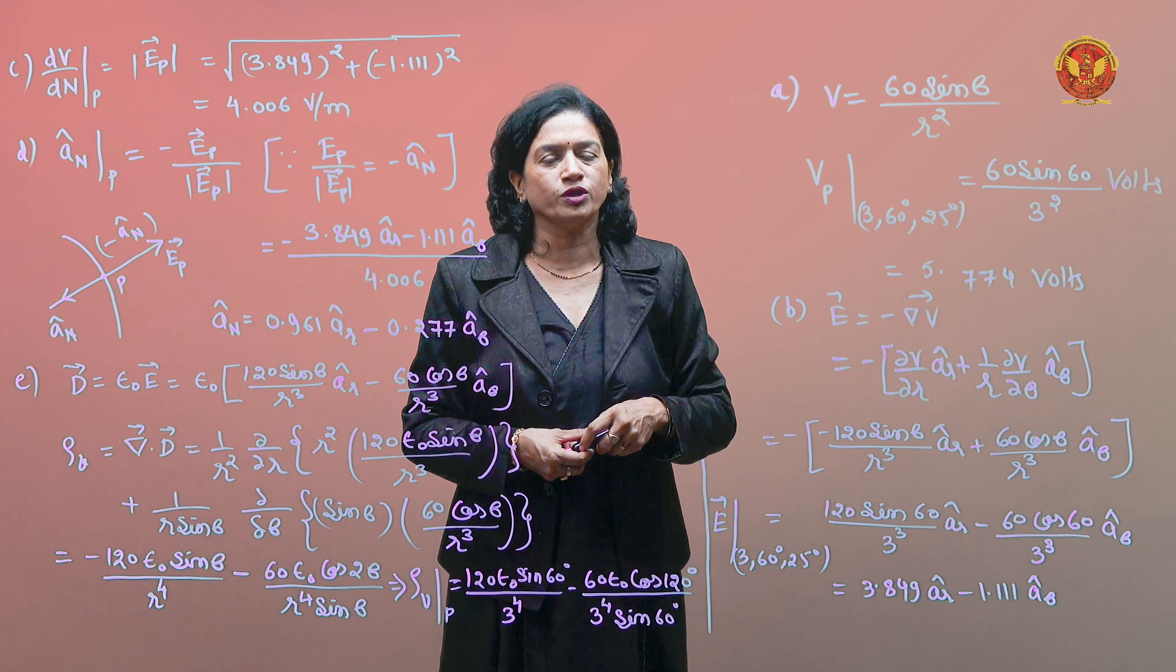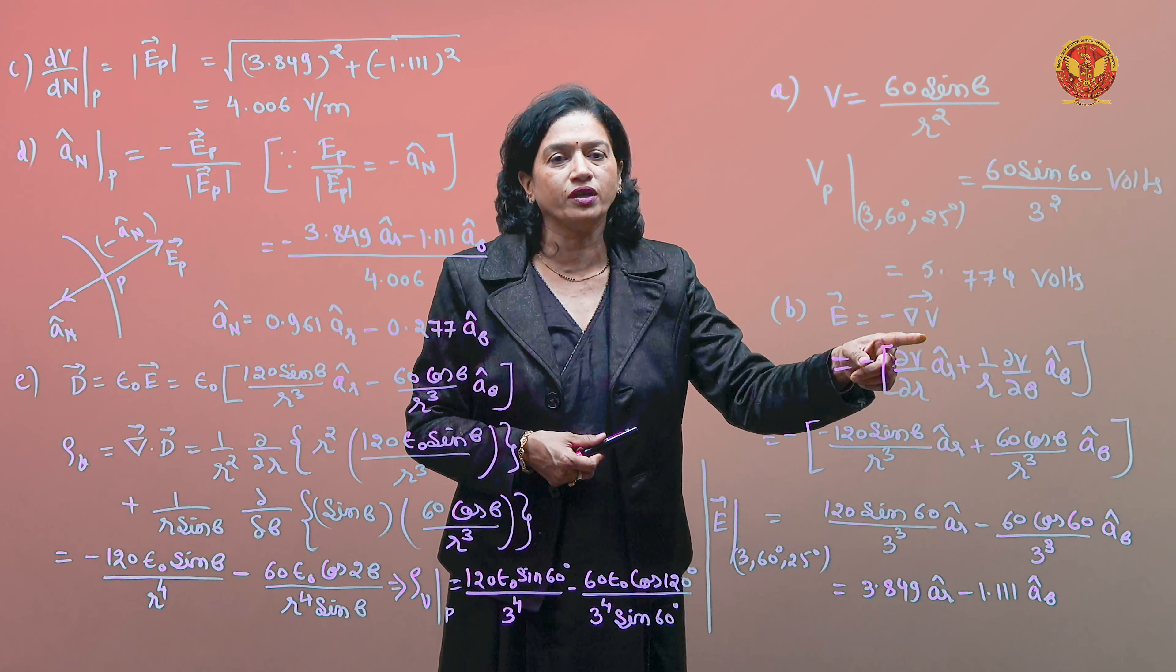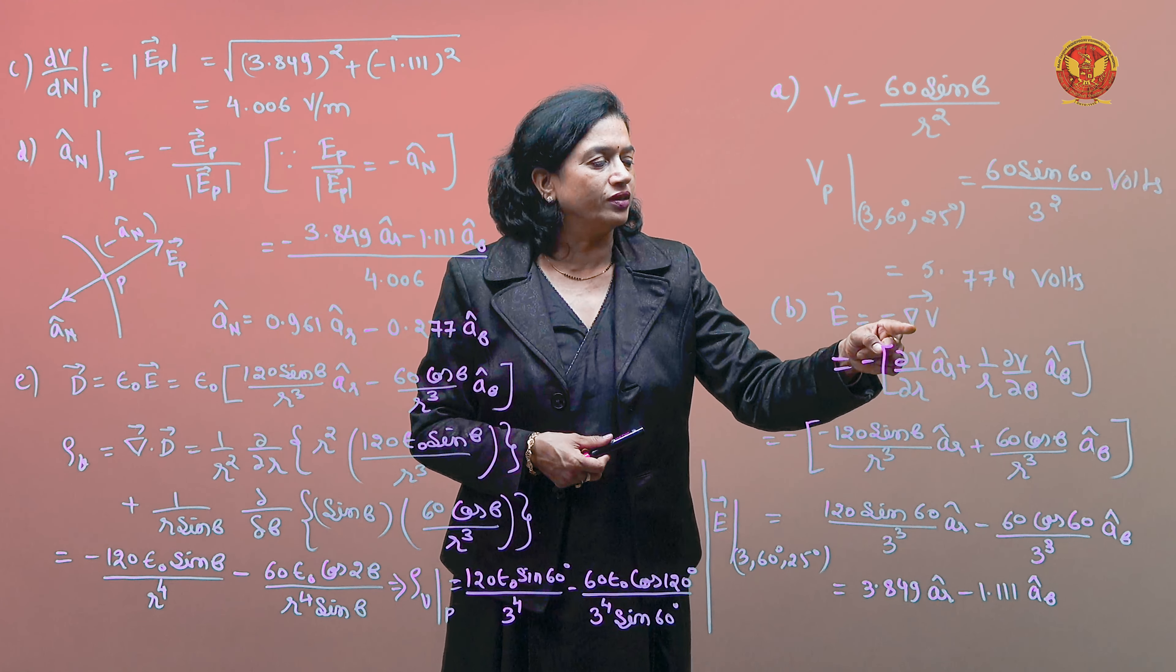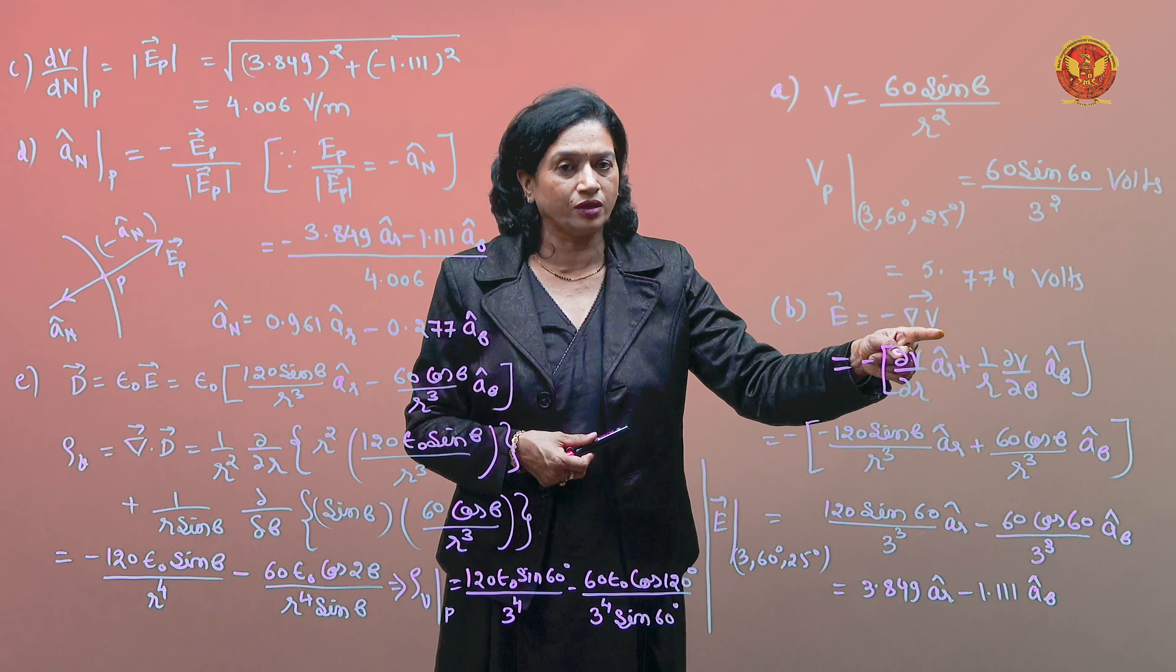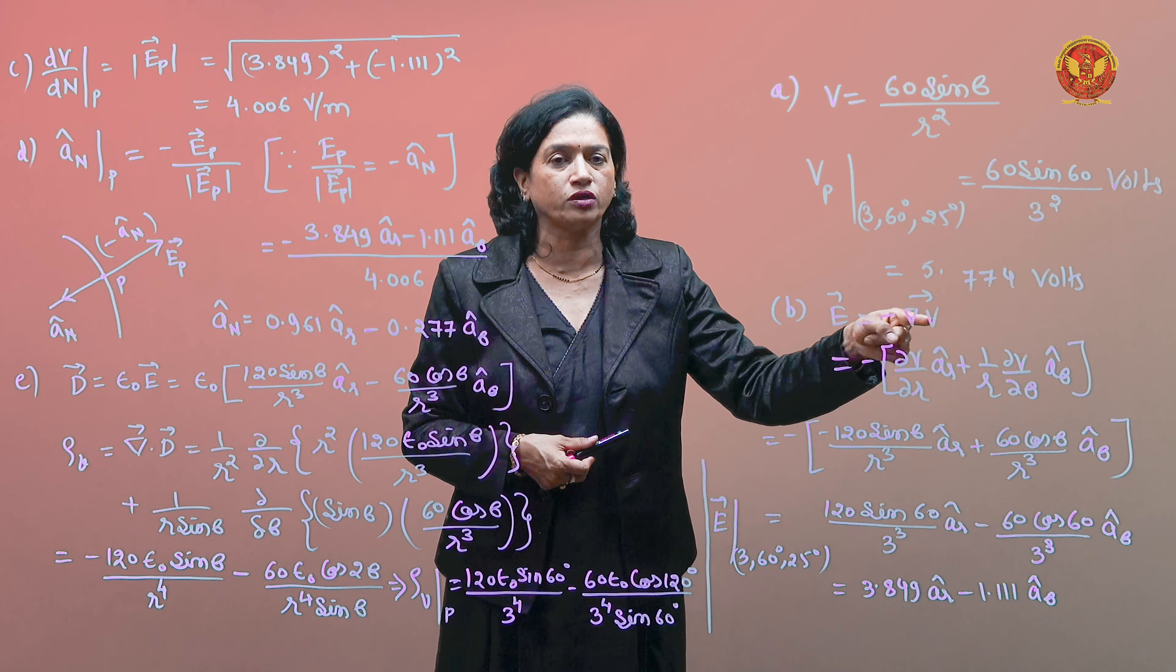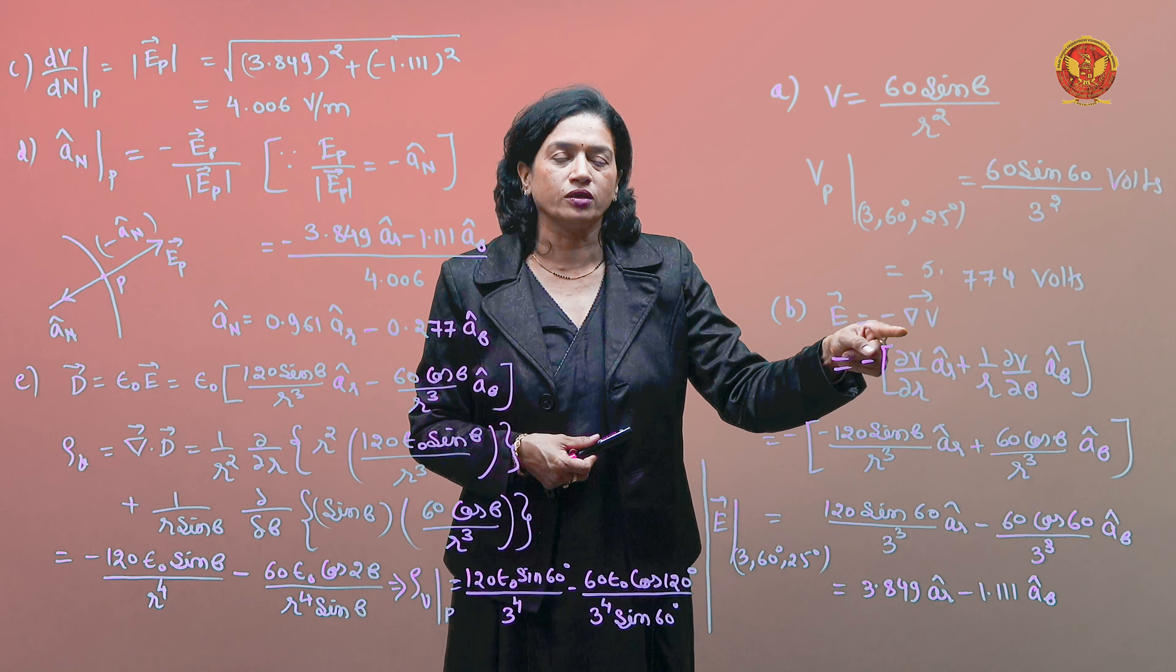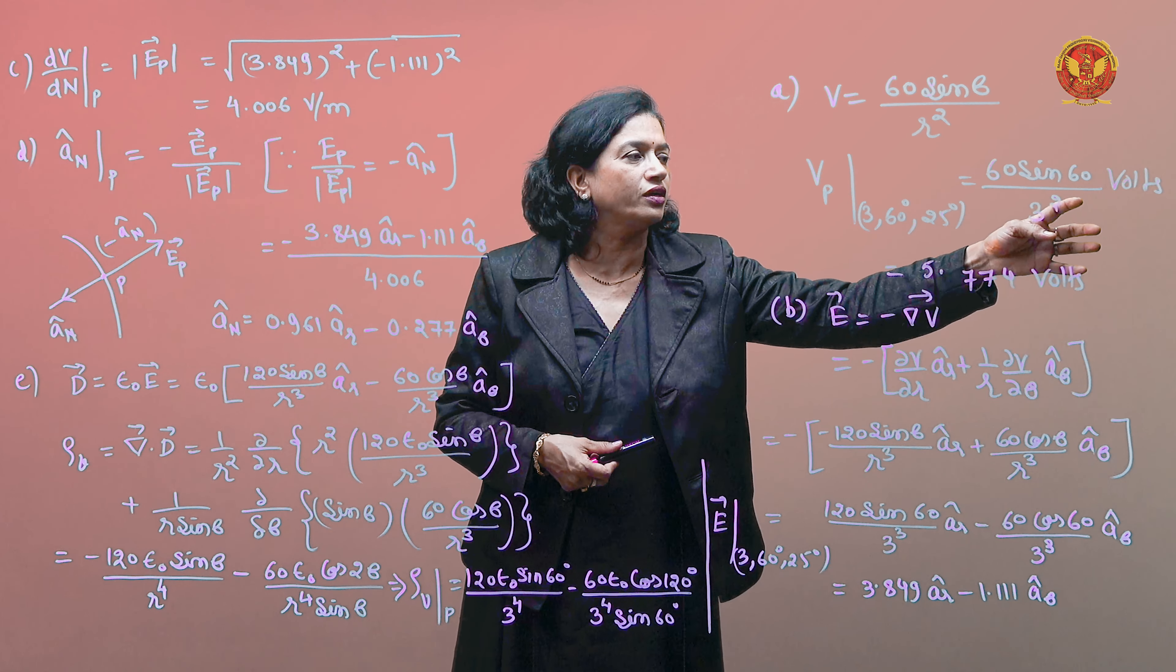Now the second part that we have is electric field at P point. So first we define the electric field: the negative potential gradient is del operator into V. This is a vector, V is not a vector, del operator is a vector, so vector into scalar is a vector quantity. So the electric field is minus del V.